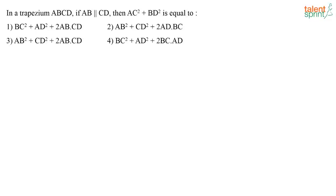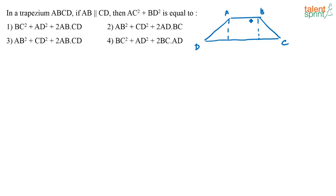In a trapezium ABCD, if AB is parallel to CD, then AC squared plus BD squared is equal to what? Anybody got this in the examination? Anybody solved it in the exam correctly? You have a trapezium ABCD. How will you approach this question? They have given us a trapezium ABCD, and AB is parallel to CD. You have to find out what AC squared plus BD squared equals.